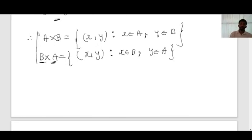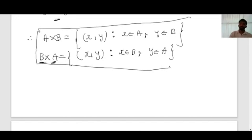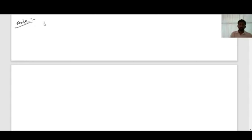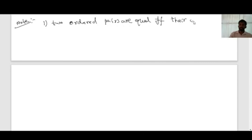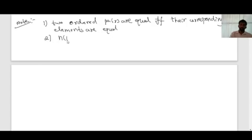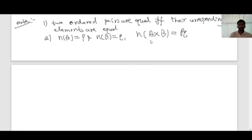From the above concepts, the key observations are: First, two ordered pairs are equal if and only if their corresponding elements are equal. Second, if n(A) = p and n(B) = q, then n(A cross B) = p × q.